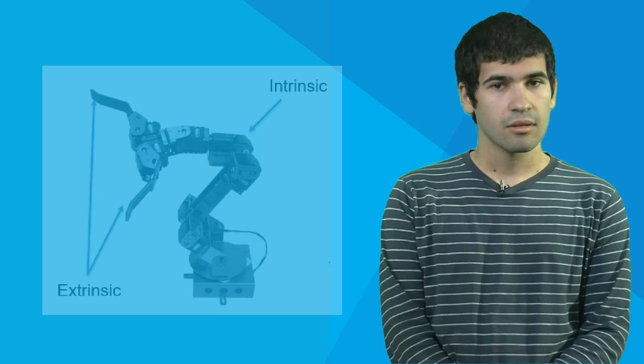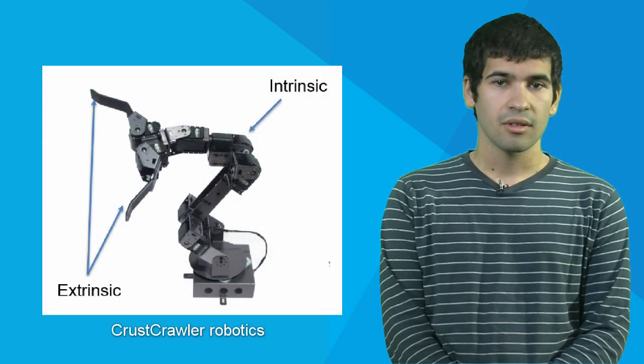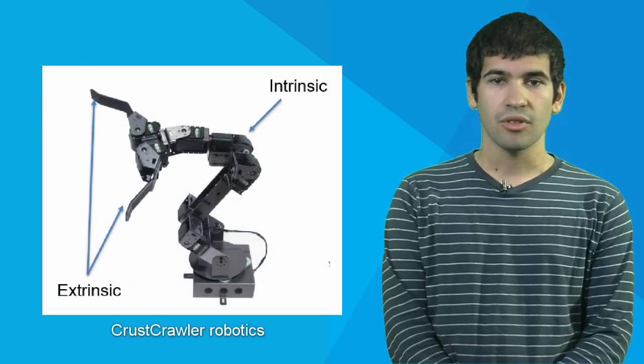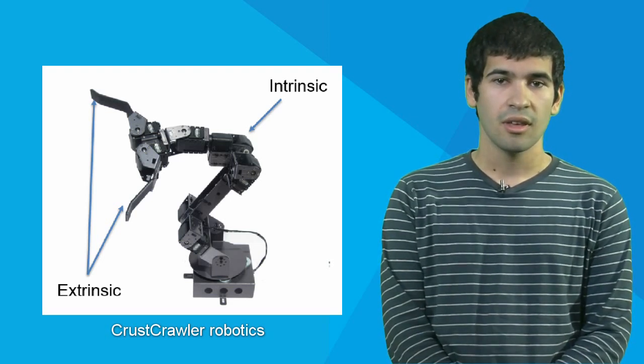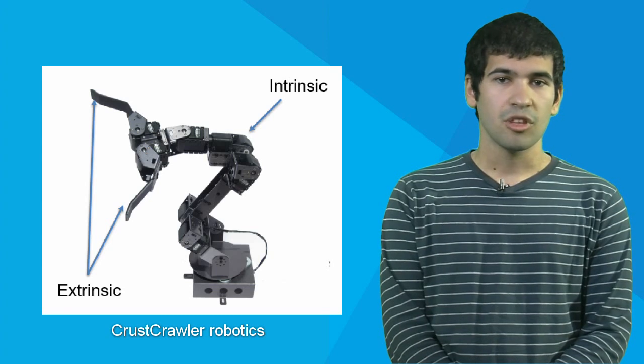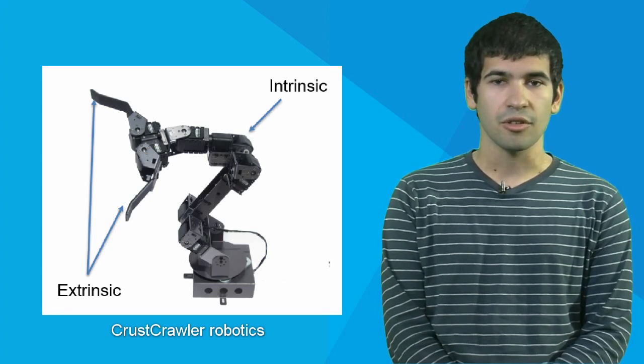But how is tactile sensing implemented on robots? Tactile sensing has two components, the intrinsic sensing, composed of sensors to detect the applied forces and angles of robotic joints, and extrinsic sensing, with the purpose of detecting the characteristics of the machine's surroundings.